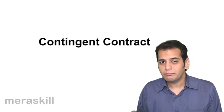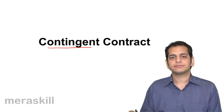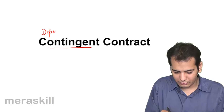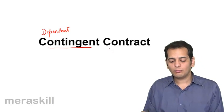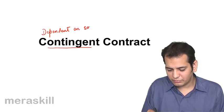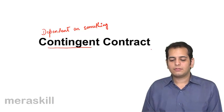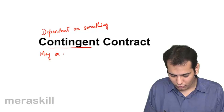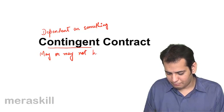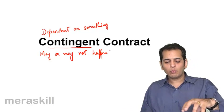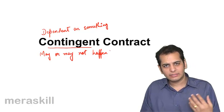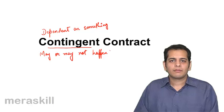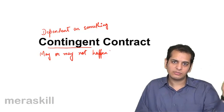What do you think is the meaning of the word contingent? Contingent means dependent — dependent on what? Contingent also means it may or may not happen. The word contingent has been defined as something which is dependent on some other thing, and this is the reason why it may or may not happen, because it is dependent on something else.